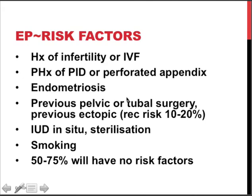Risk factors include a history of infertility or IVF, previous pelvic inflammatory disease, salpingitis, or a perforated appendix, endometriosis due to pelvic inflammation, previous pelvic or tubal surgery, a previous ectopic pregnancy resulting in a recurrence risk of 10 to 20%, pregnancy with an IUD in situ or after sterilization, and smoking. Notably, 50 to 75% of women with an ectopic pregnancy will have no risk factors whatsoever.